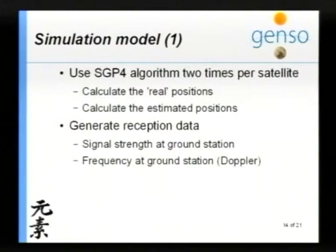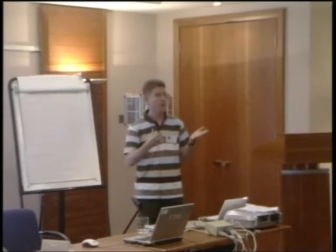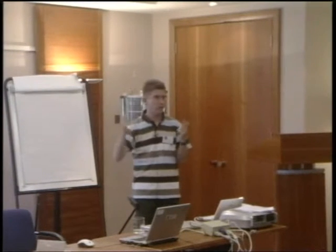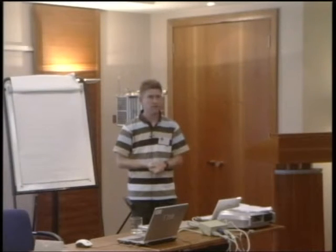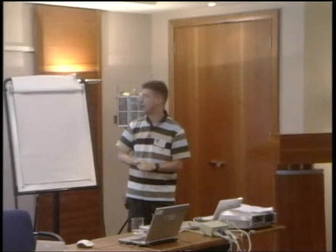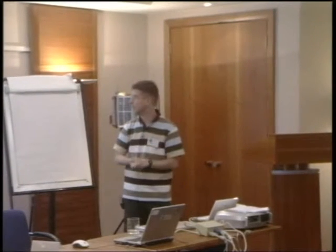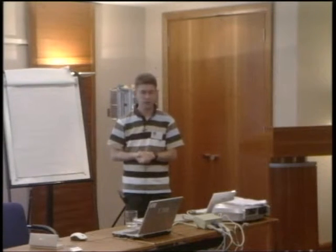Regarding the simulation model, because GENSO doesn't provide much data yet: we use the SGP4 algorithm twice per satellite — once to calculate the real position using the NORAD TLE and let the satellite fly around, and on the other side of the program, I try to reconstruct the orbit also by a TLE fed into SGP4. I have two positions of the satellite — one real and one estimated — and I can see what the difference is and tune a little bit. The simulation generates reception data for GENSO: mainly signal strength from a ground station receiving a satellite, and frequency at the ground station because the frequency is Doppler shifted. These are the two main inputs for the orbit determination.